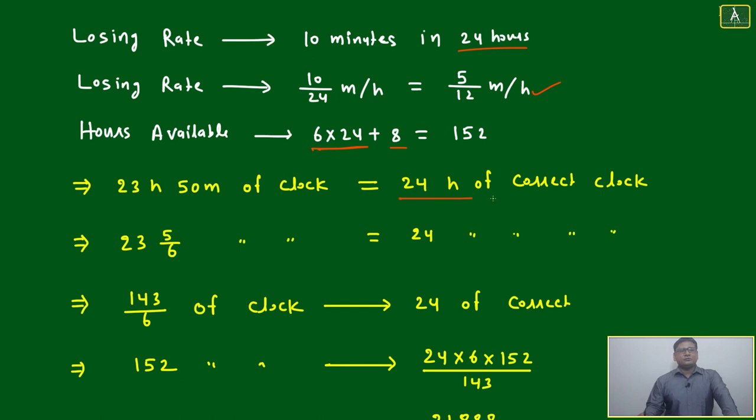23 hours 50 minutes of clock means 24 hours of correct time. Try to understand this analogy: 10 minutes losing means 23 hours 50 minutes of this clock actually will be 24 hours of correct clock.